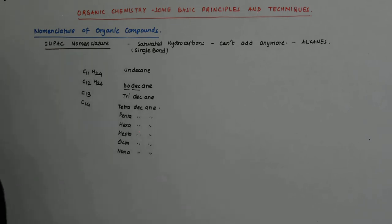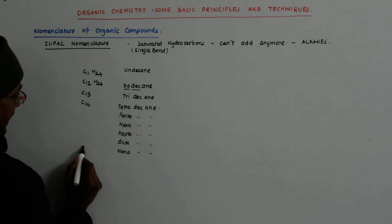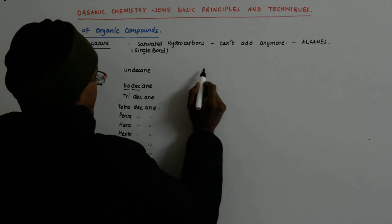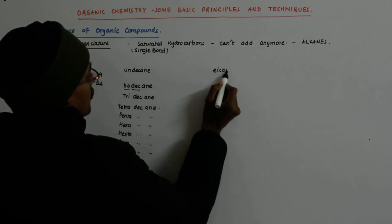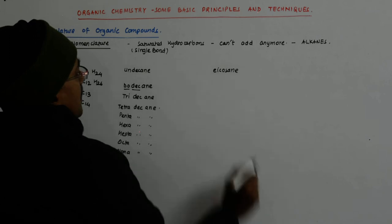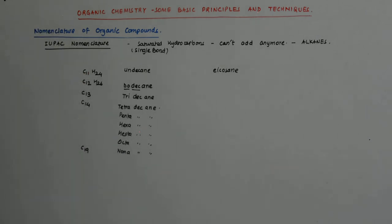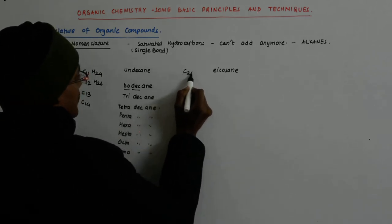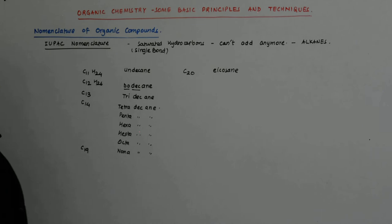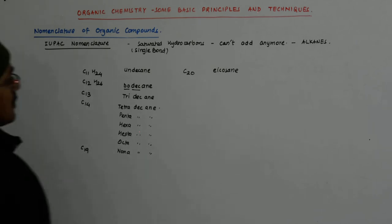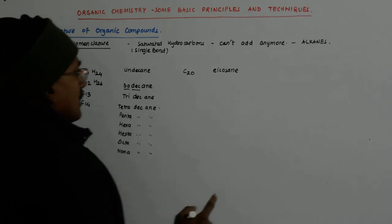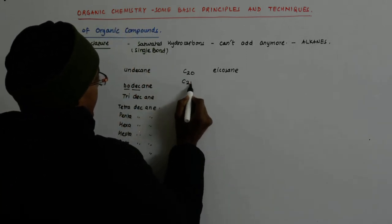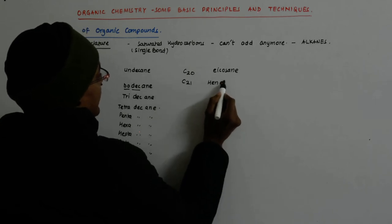And then there is a change. We call it icosane. This is 20. Now it will seem as if 21 will be unicosane, but somehow it again changes. It is henicosane.